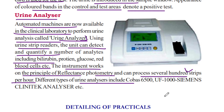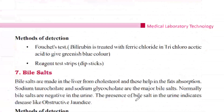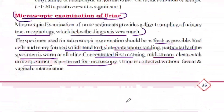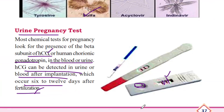Different types of urine analyzers include Cobas 6500, UF-1000, and Siemens Clinitek Analyzer. If you found this useful, please like, share, or subscribe. We will see you in the next video.